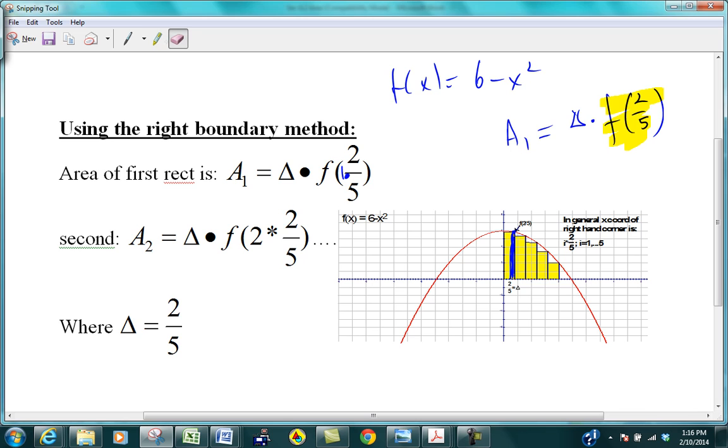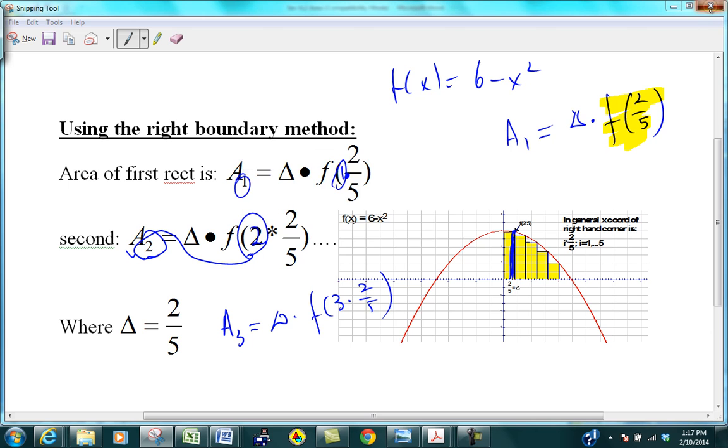Right, so notice that the area of the second rectangle is delta times f2. So do you see how this goes with this? Right? And how this goes with this? What do you think a3 is going to be? What do you think a3 is going to be? Megan? Are you raising your hand, or what's a3 going to be? Exactly. Exactly. All right? Right? Silas, you okay? Or you're zoned? Okay.